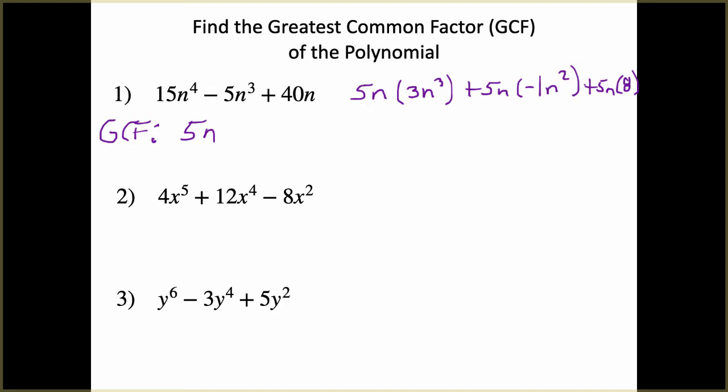For the next one we have 4x⁵ + 12x⁴ − 8x². We look for the largest number that can divide evenly out of everything. The largest number that divides evenly out of 4, 12, and 8 is 4. Then we look for the common variable between all three terms with the lowest exponent, and that would be x².